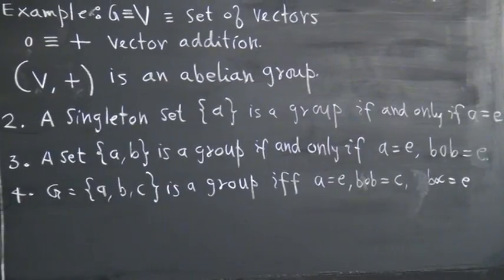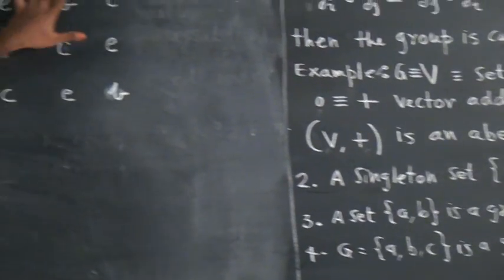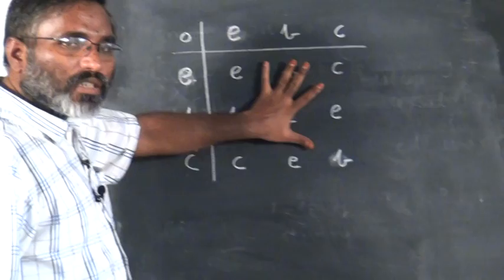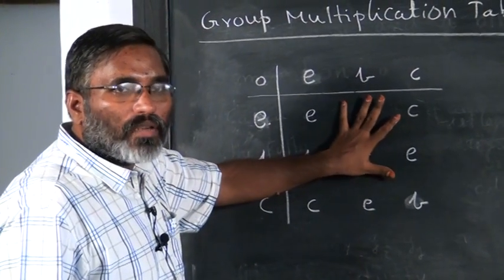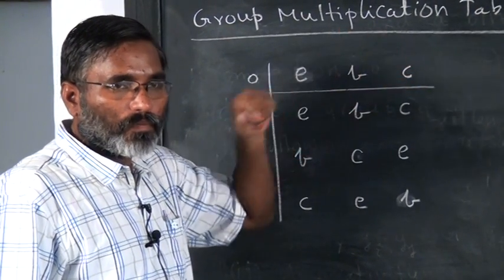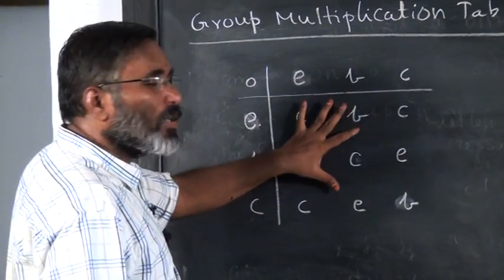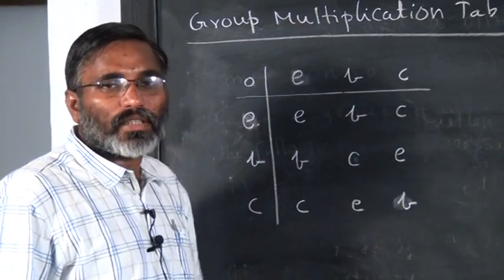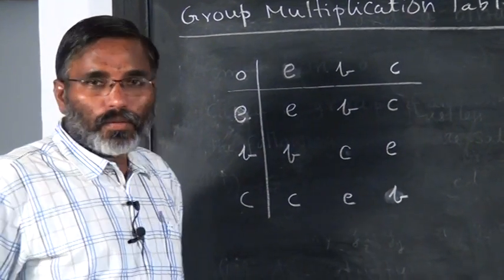When you say you have a closure property, that means in the body of this table you should not have elements which are outside the group.